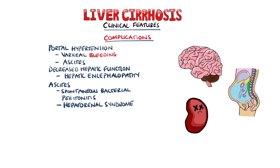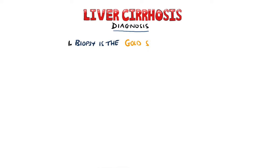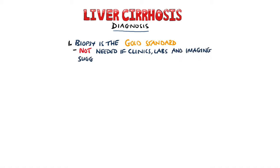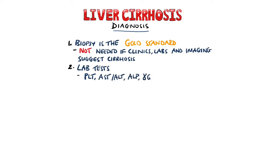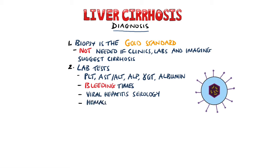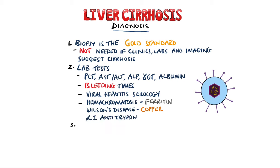Another potential complication of cirrhosis is hepatocellular carcinoma. Liver biopsy is the gold standard for diagnosing cirrhosis, but is not needed if the clinical manifestations, lab findings, and imaging suggest cirrhosis. Lab tests include platelet count, aminotransferases, alkaline phosphatase, gamma-glutamyl transferase, bilirubin, albumin, bleeding times, as well as viral hepatitis serology. Ferritin and copper levels may also be checked for haemochromatosis or Wilson's disease suspicions, and alpha-1 antitrypsin levels may also be taken.